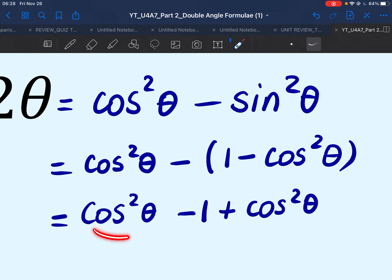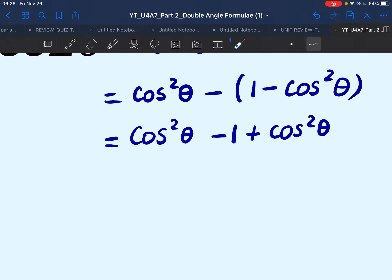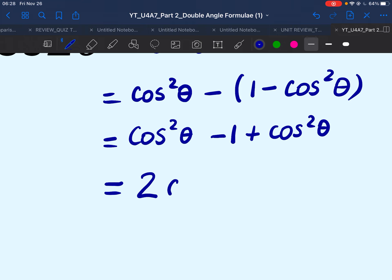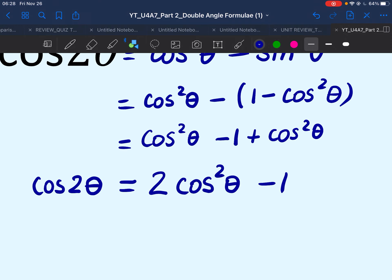As you can see here, we have two like terms, cos square theta, both positive, which will add to 2 cosine square theta minus 1. So there goes the last formula for cos 2 theta.